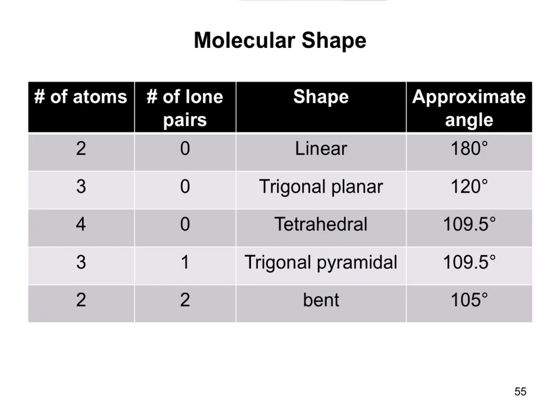trigonal pyramidal, and bent. It shows you their approximate angles, and the distinction between how many atoms it's bound to and how many lone pairs of electrons there are. This will cover everything.